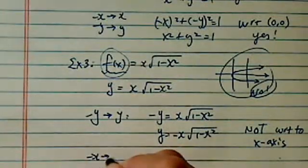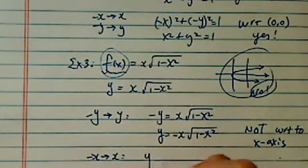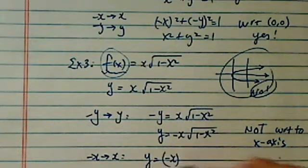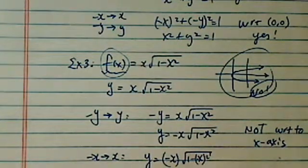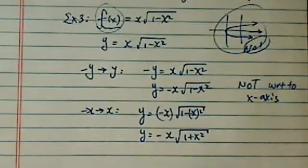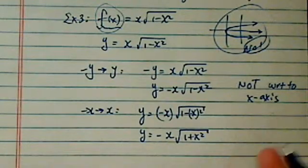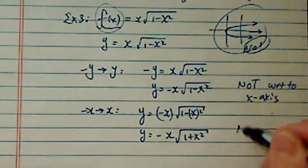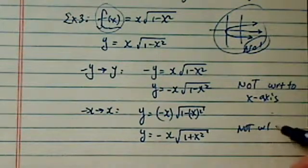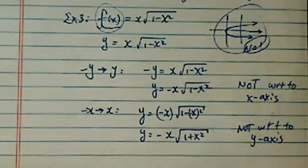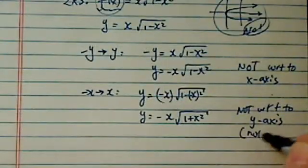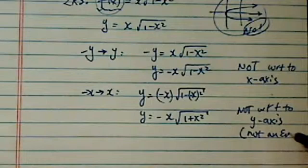Let's do the next one, minus x to x. And then I have y = (-x)√(1-(-x)²). And then I have y = -x√(1+x²). This one does not give us what we needed to have, so not with respect to the y-axis either. So it's basically the same. It's not an even function. An even function is one that folds along the y-axis right on back to itself.